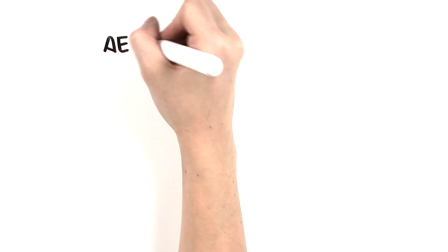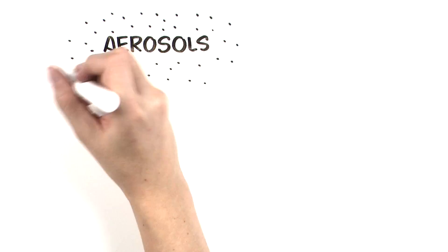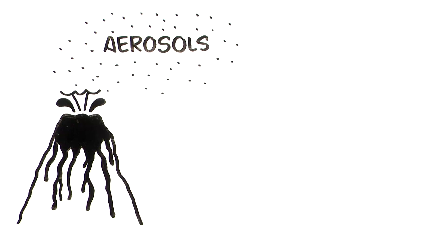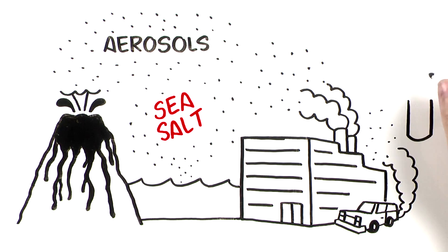Most aerosols have the opposite effect. Aerosols are tiny particles in the atmosphere. Some aerosols come from natural sources. Others come from industrial pollution. One thing aerosols don't come from is a spray can.